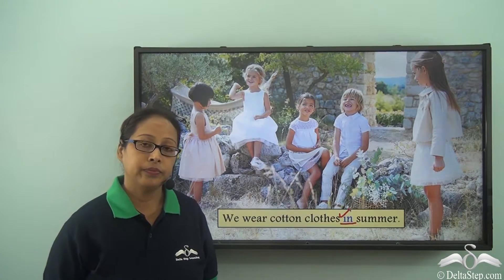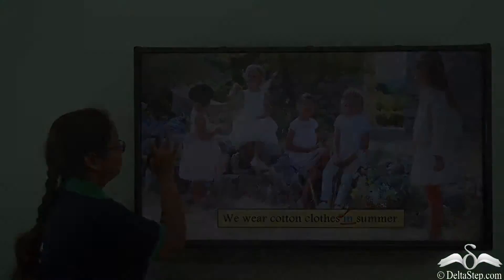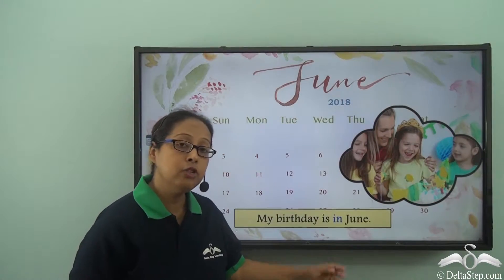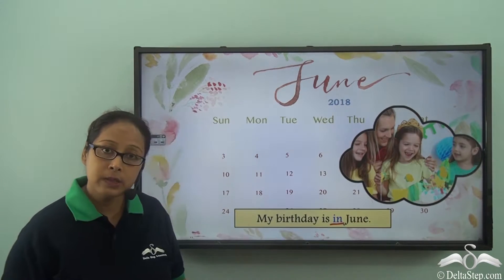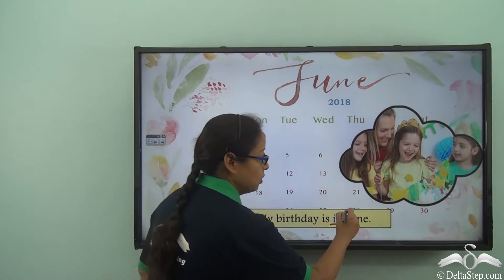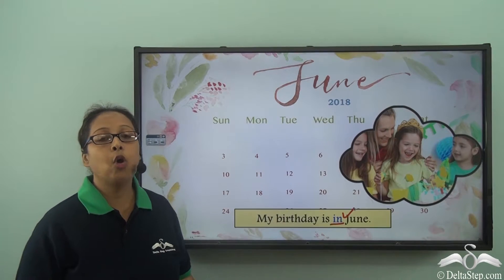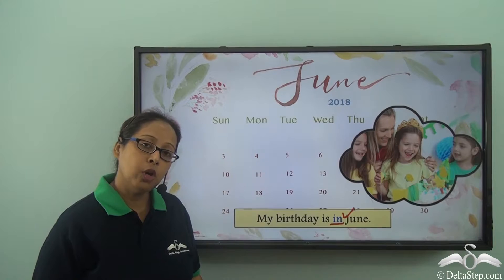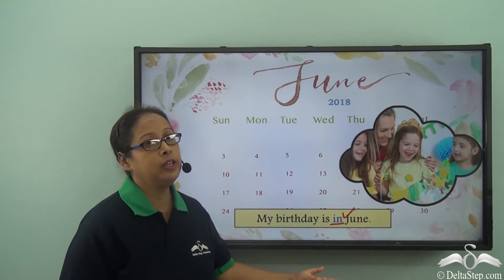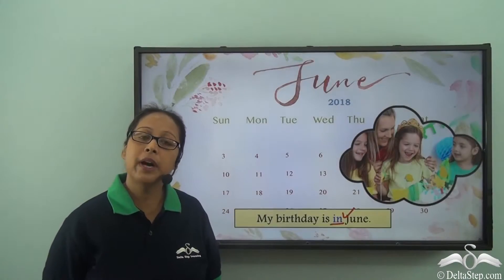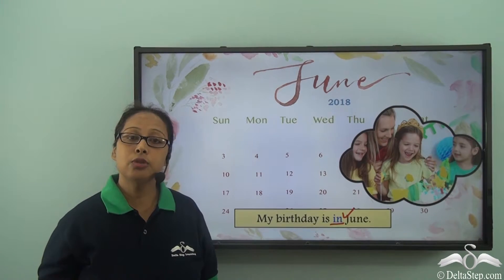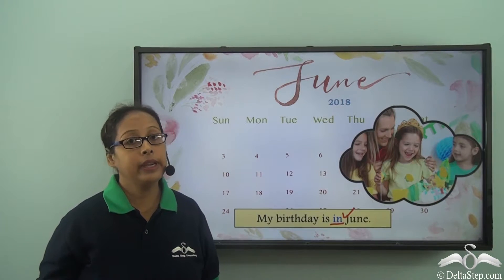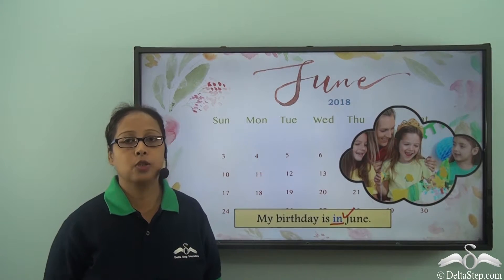In spring, in autumn, in winter. My birthday is in June. The preposition is 'in.' So 'in' can also be used when we are talking about months — in June, in September, in December, in October and so on.